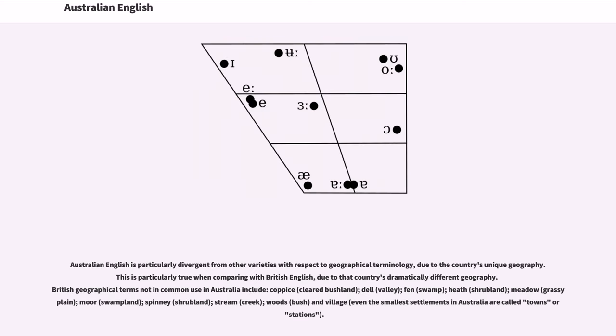Australian English is particularly divergent from other varieties with respect to geographical terminology, due to the country's unique geography. This is particularly true when comparing with British English, due to that country's dramatically different geography. British geographical terms not in common use in Australia include: coppice (cleared bushland), dell (valley), fen (swamp), heath (shrubland), meadow (grassy plain), moor (swampland), spinney (shrubland), stream (creek), woods (bush), and village. Even the smallest settlements in Australia are called towns or stations.